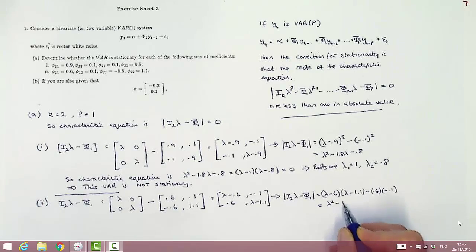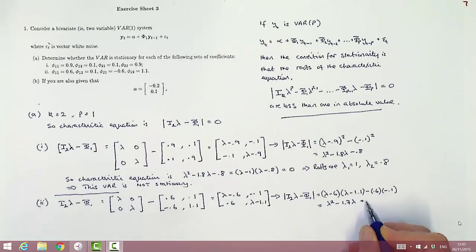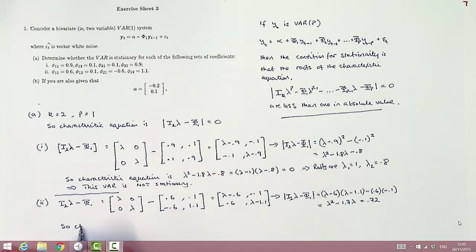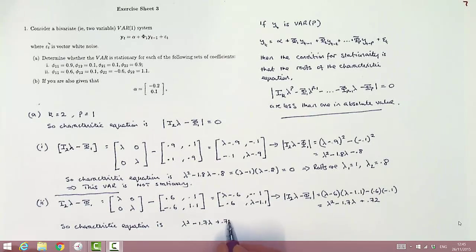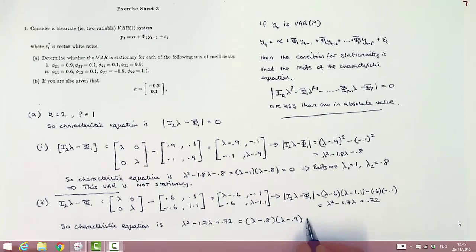Multiplying out again, of course, we get a quadratic in lambda. This time it's this particular expression. So to get the characteristic equation, we set that quadratic equal to 0. And as we write it out, we'll note that the quadratic can actually be factored in a convenient way, because it's equal to lambda minus 0.8 times lambda minus 0.9.